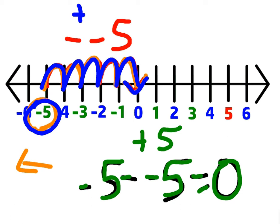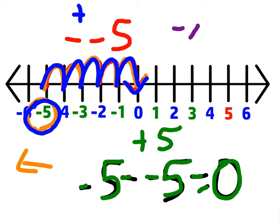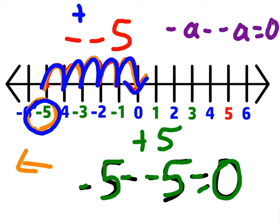In general, if I wanted to write this rule, it would be negative X minus negative X gives you 0, or negative A minus negative A, either way. For example, negative 9 minus negative 9 would give you 0, because that would be the same as negative 9 plus 9.